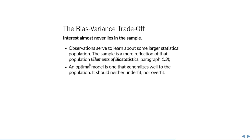Why is it bad to fit the sample well? Because we're not interested in the sample — we're almost never interested in the sample. We're interested in the population the sample comes from, and the sample is just a reflection of that population. An optimal model is one that generalizes well to the population — it should neither underfit nor overfit.